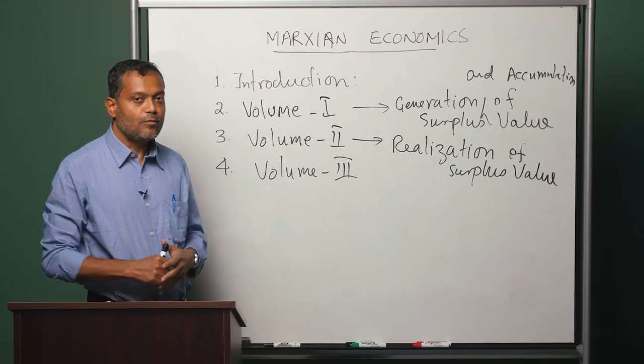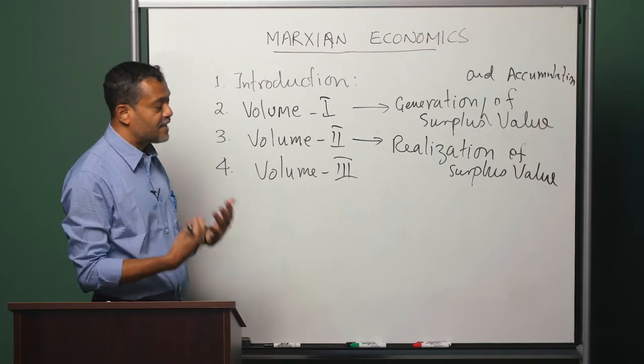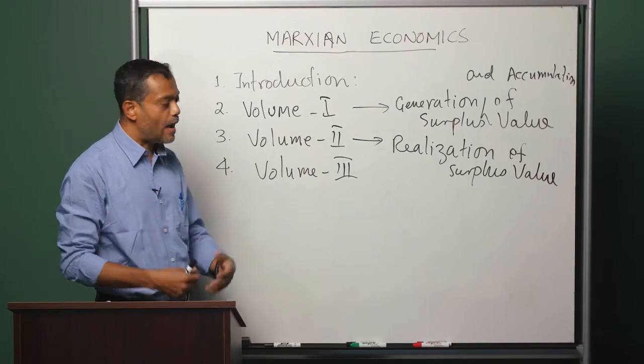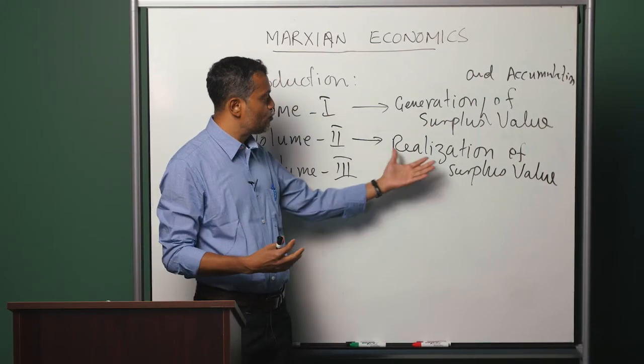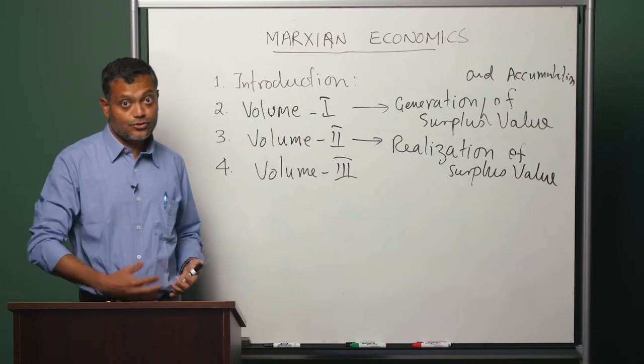In Volume 1, we are abstracting from issues that are relevant to the second question: How does the capitalist system sell all the commodities at prices that are necessary to realize all the surplus value that was generated?